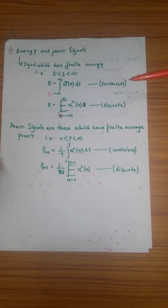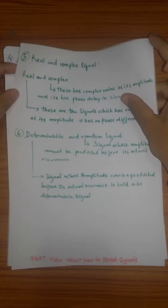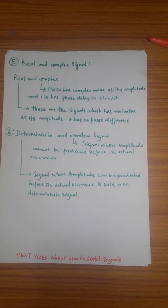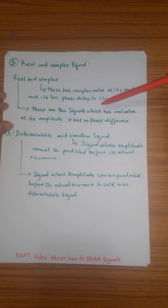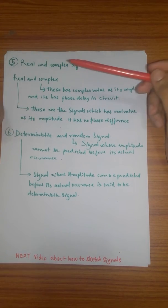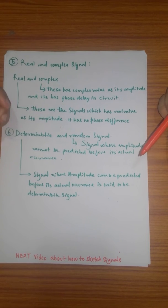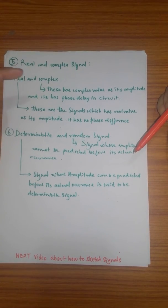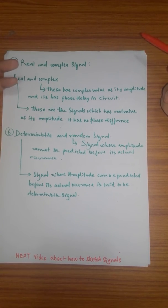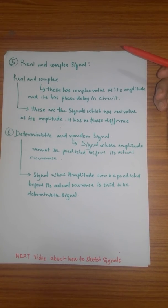Now we will jump to the fifth type of signal: real and complex signals. Real signals are those which have a real value as their amplitude and have no phase difference. Complex signals have a complex value at their amplitude and have a phase delay in the circuit. These are real and complex signals.